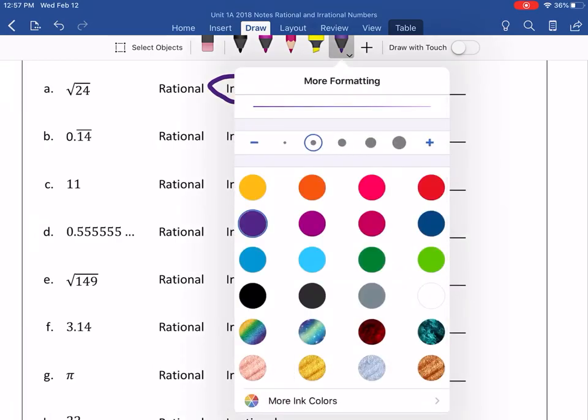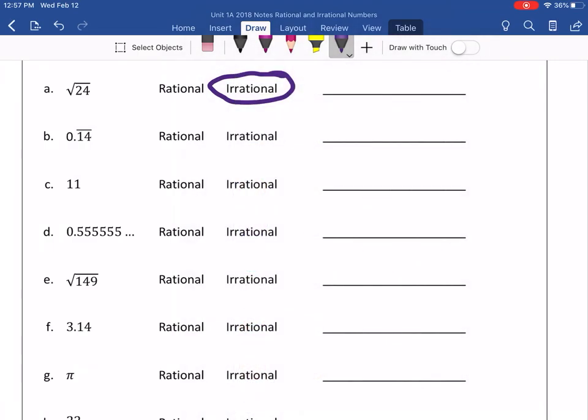It is irrational, and then on the line, you have to explain why you chose that answer. And this is irrational because it is a non-perfect square. That's what you would need to write to be a 3 and not a 2.